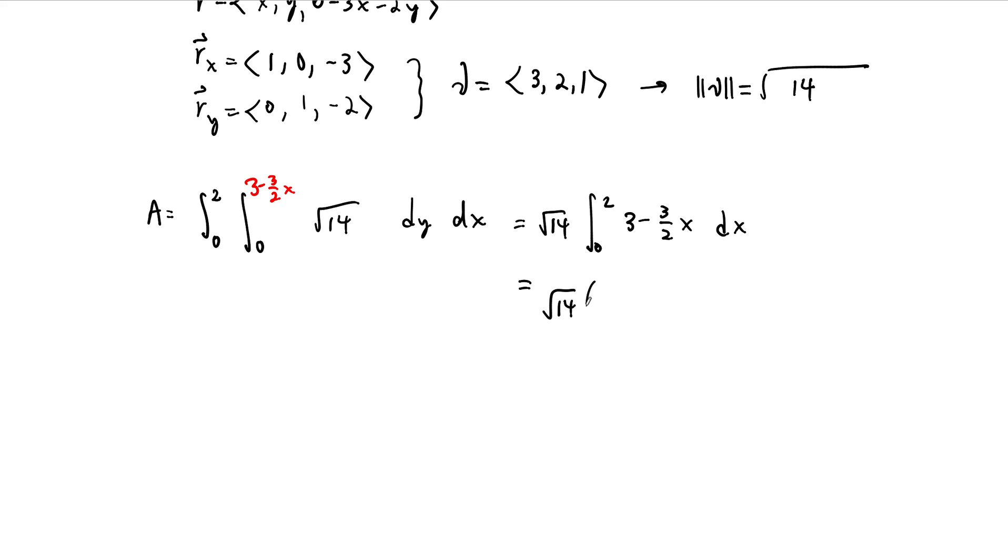And at this point, the integral is a breeze. So this is 3x minus 3 fourths x squared from 0 to 2. And we end up with root 14 times, this is going to be 6 minus 3. And so this is just 3 root 14. And there's the surface area of the portion of the plane cut off by the first octant.